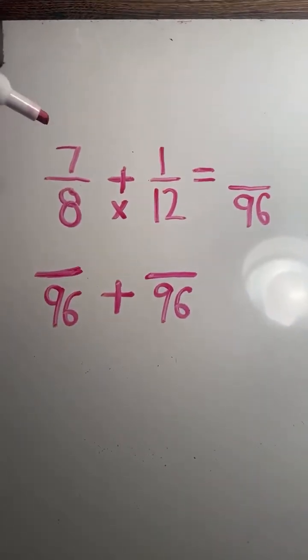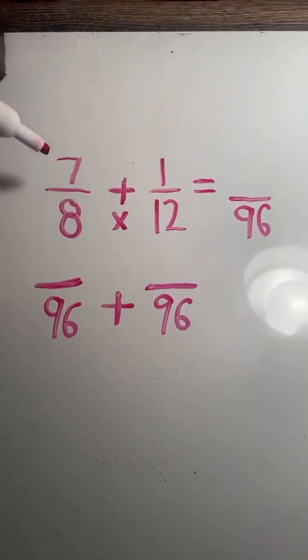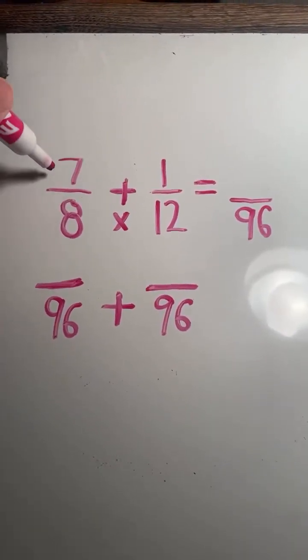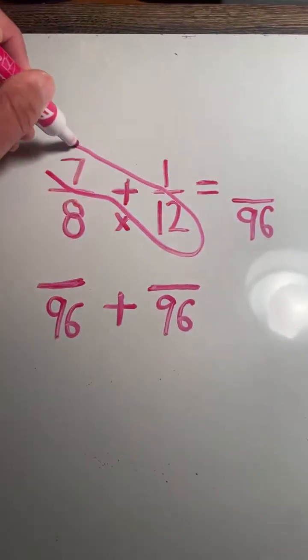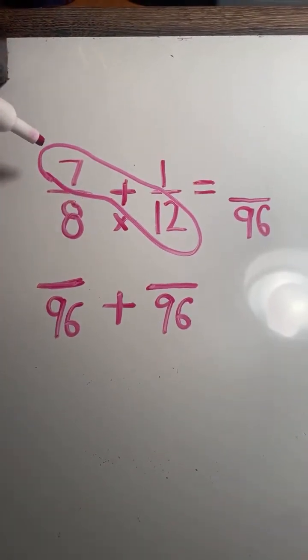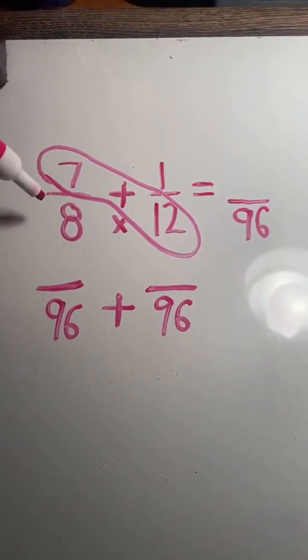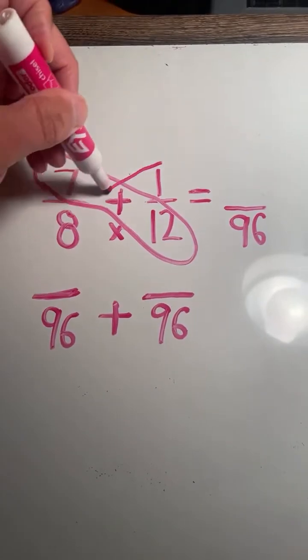Now to find our numerators, we have to multiply each numerator times the opposite denominator. So the 7 in 7 eighths, we have to multiply that times 12. The 1 in 1 twelfth, we have to multiply that times 8.